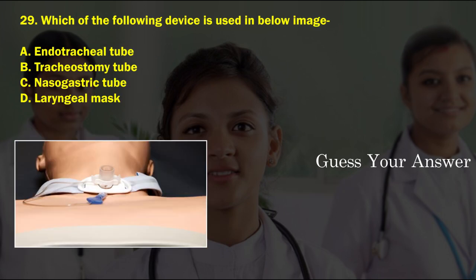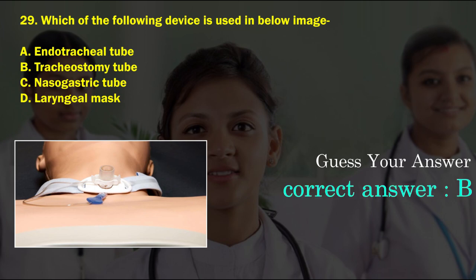Which of the following devices is used in the below image? Option A: endotracheal tube, option B: tracheostomy tube, option C: nasogastric tube, option D: laryngeal mask. The correct answer is option B, tracheostomy tube.